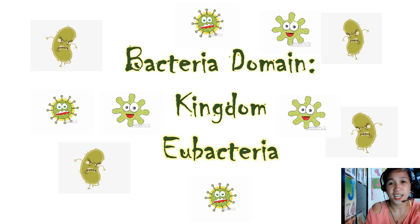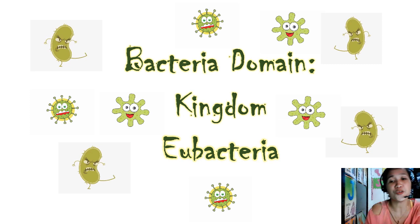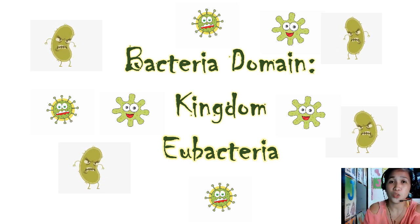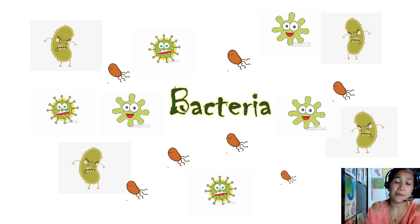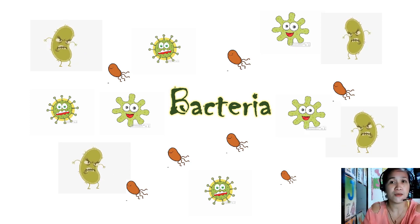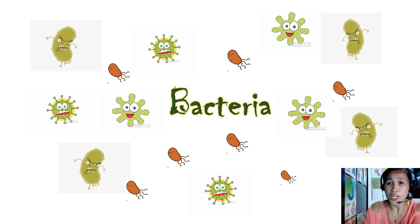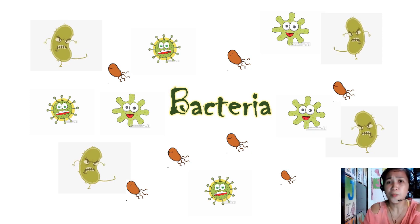We are through with the archaea bacteria. Let's proceed to the bacteria domain, or the kingdom Eubacteria. Members of Eubacteria are unicellular and microscopic, referred to as the true bacteria, and are usually called the bacteria group. Their cell walls are made of peptidoglycan, which is a carbohydrate. Bacteria consist of a very diverse group with varied shapes, and they can be found in almost all kinds of places like soil, water, and even in the air.